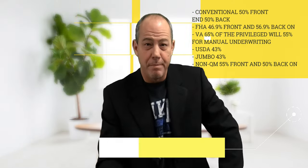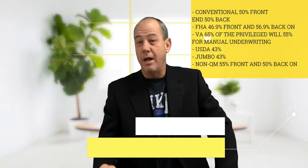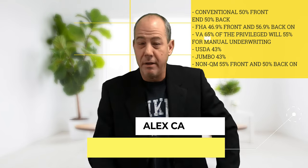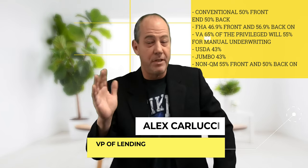Conventional, we go up to 50% front-end, 50% back-end. FHA is 46.9 front-end, 56.9 back-end.